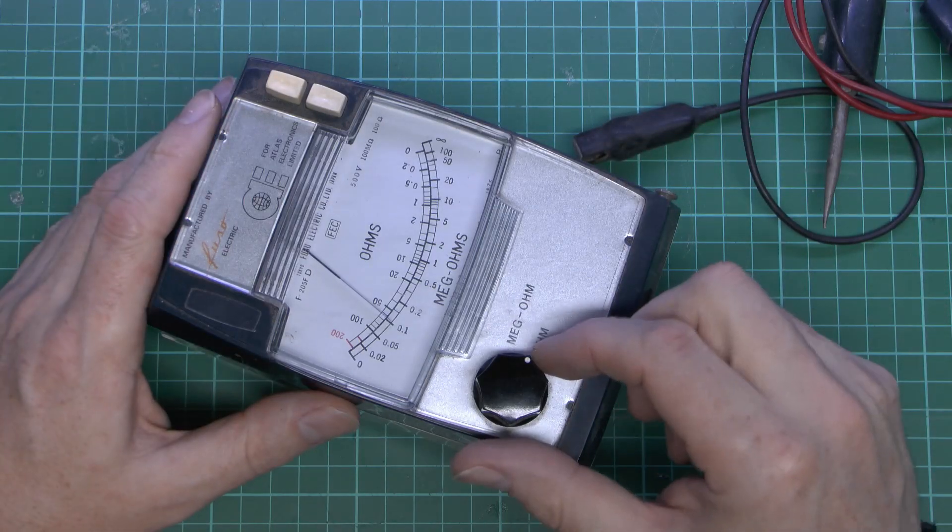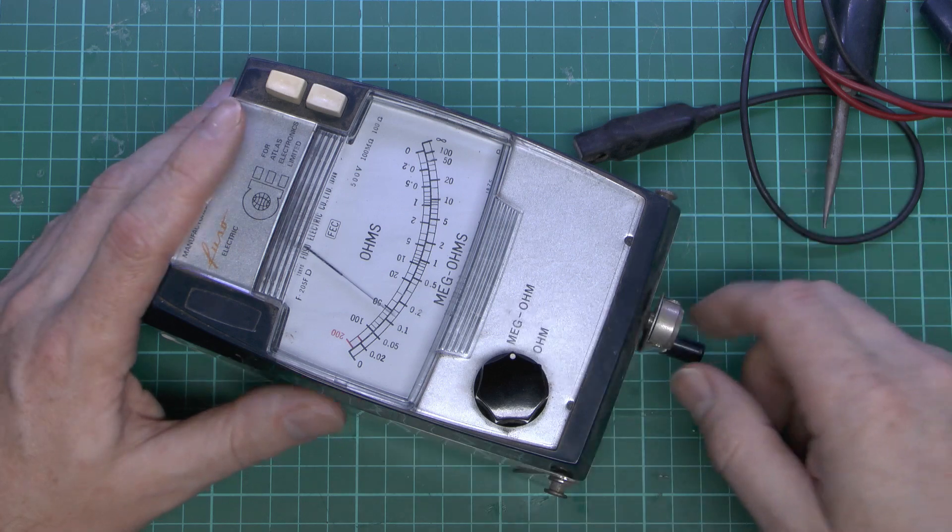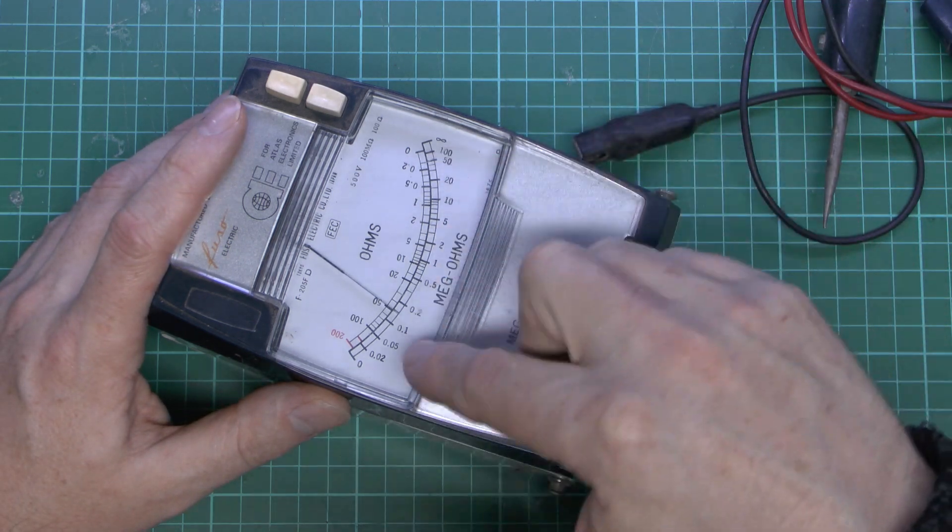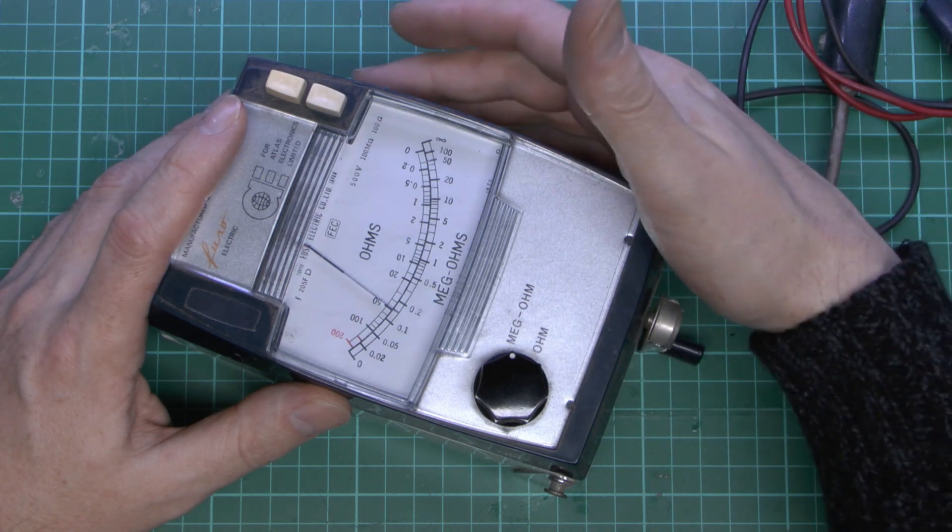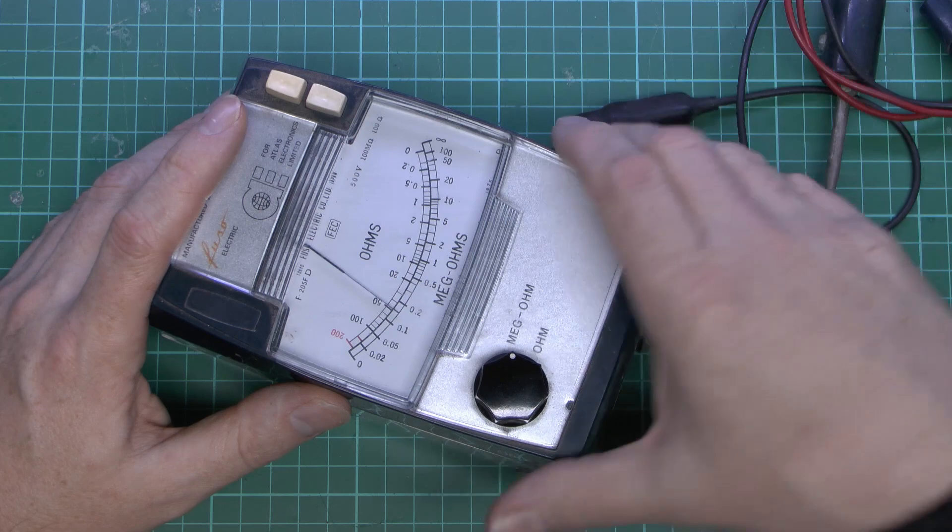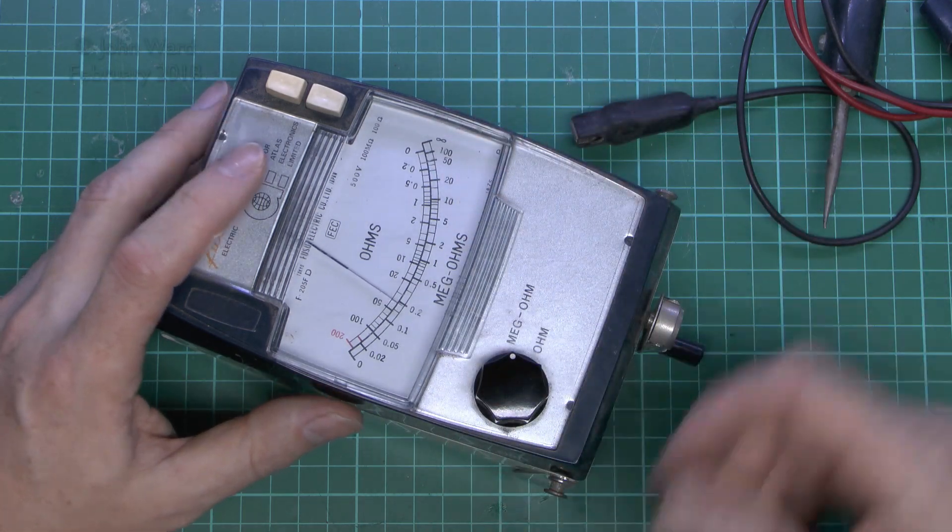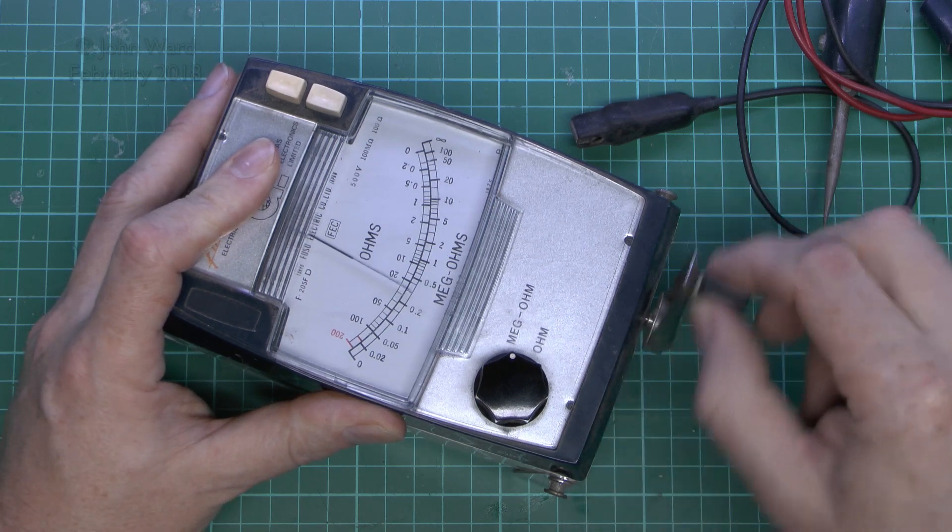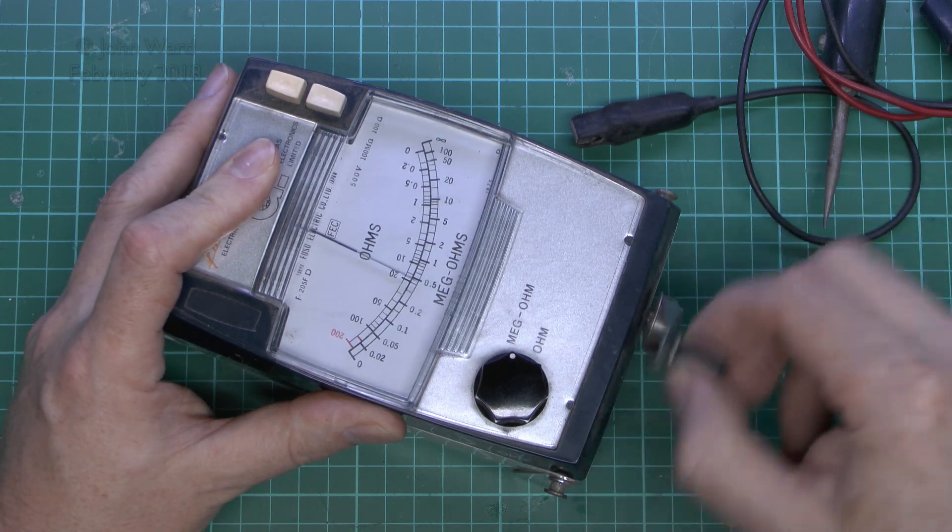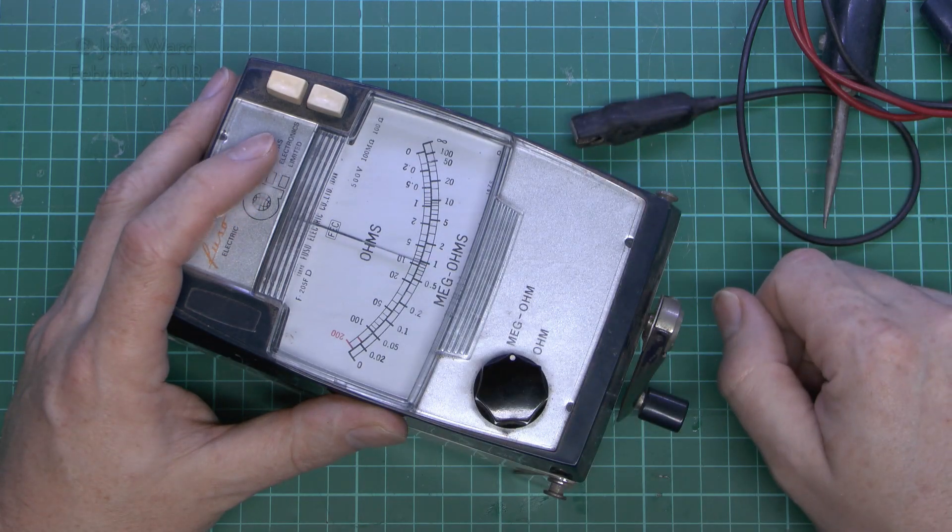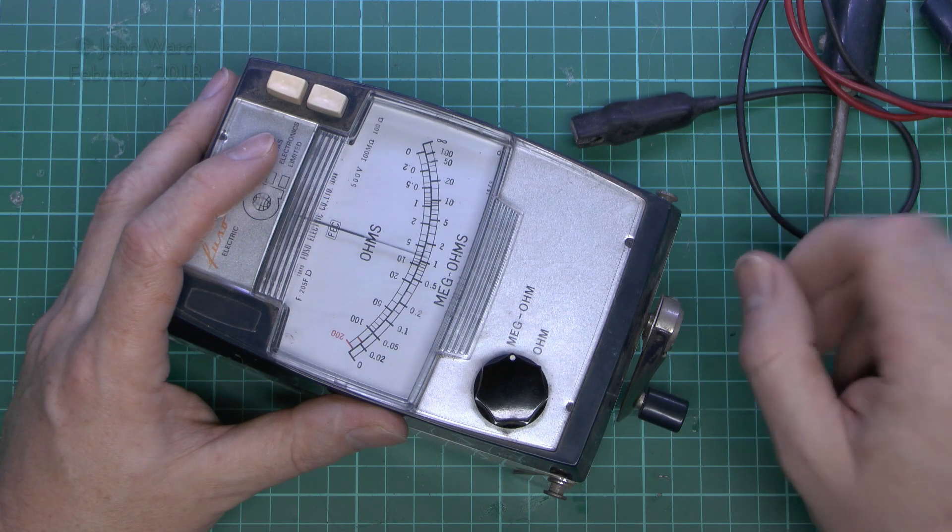Now the way it's supposed to work is that on the megaohms scale here, turning the handle would generate about 500 volts, and then it would show the appropriate resistance here. Now with nothing connected, it should go up to the infinity end there, because basically there's no thing attached at all. So basically as high as possible, but if we set it there and actually turn the handle, as you can see it doesn't. It basically sort of creeps along somewhere in the middle, so definitely something wrong there.